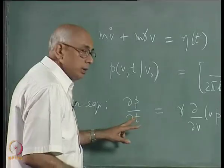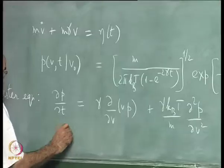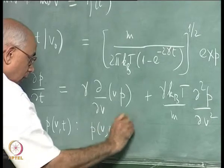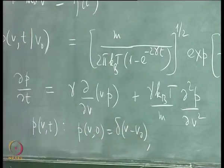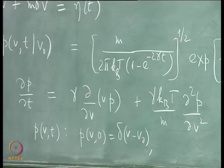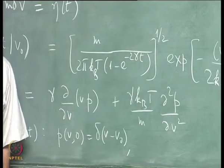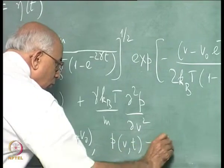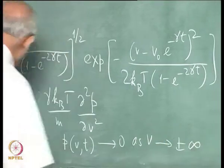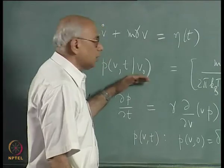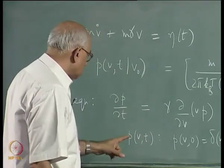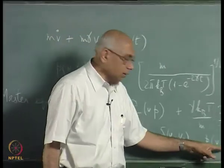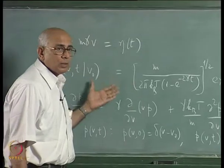This equation, together with the initial condition P(V, 0) = δ(V – V₀) and natural boundary conditions — P(V,t) → 0 as V → ±∞ — specifies a unique solution. The unique solution of this second-order PDE with these initial and boundary conditions happens to be the Ornstein-Uhlenbeck distribution.